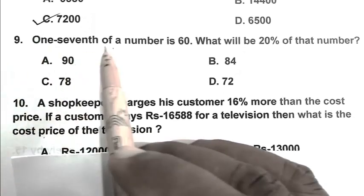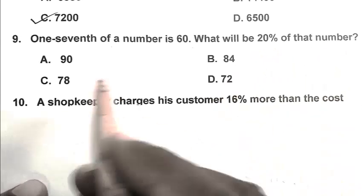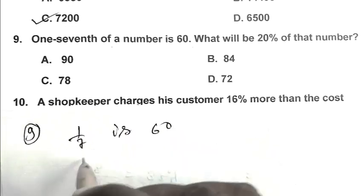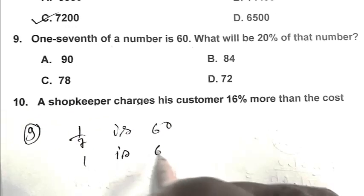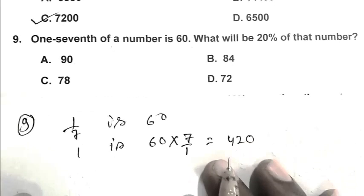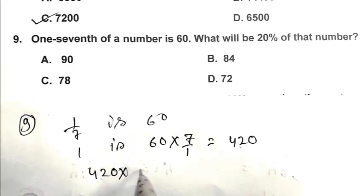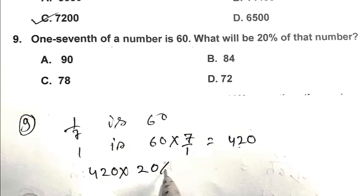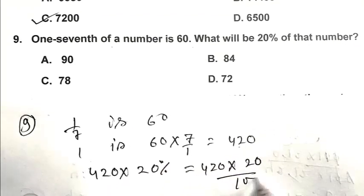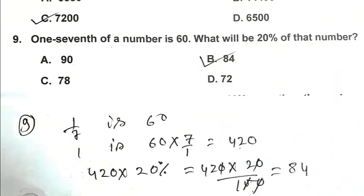Question number 9: One seventh of a number is 60. What will be 20 percent of that number? If one seventh is 60, then the number is 60 multiplied by 7, which is 420. Twenty percent of 420 is 420 multiplied by 20 upon 100, which equals 84. B is the right answer.